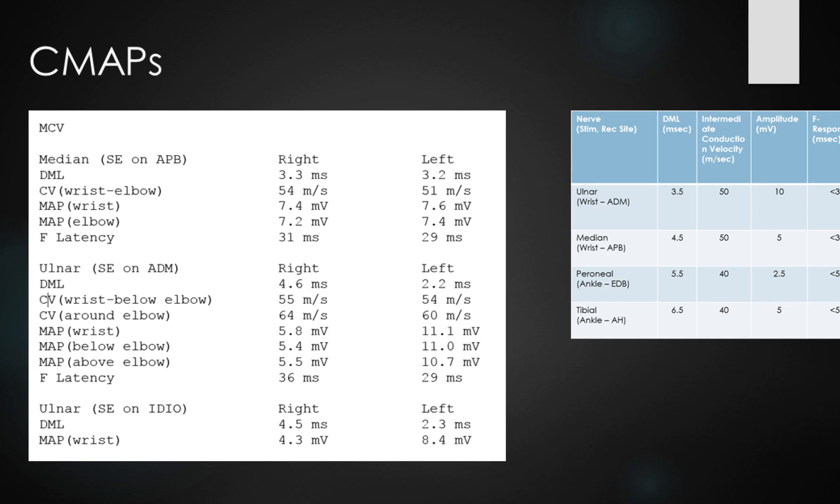So summarizing the motor responses, we've got normal median motor conductions. Within the ulnar nerve we've got distal slowing on the right-hand side to both the ADM branch and the IDIO branch. And we can see for both of those there's a reduction in the amplitudes as well, especially when we compare to the left-hand side.